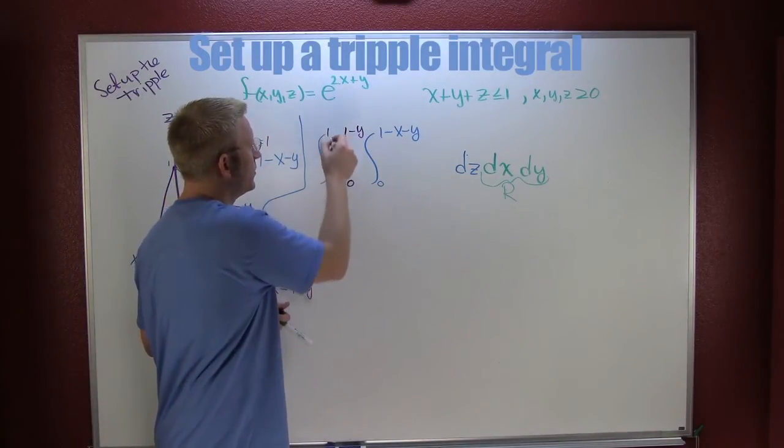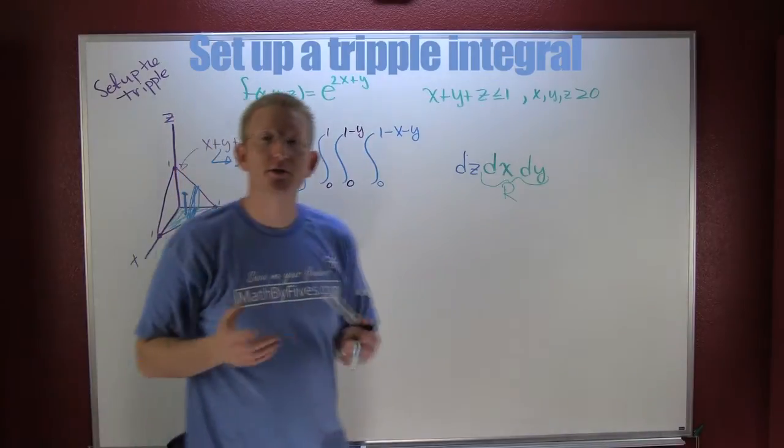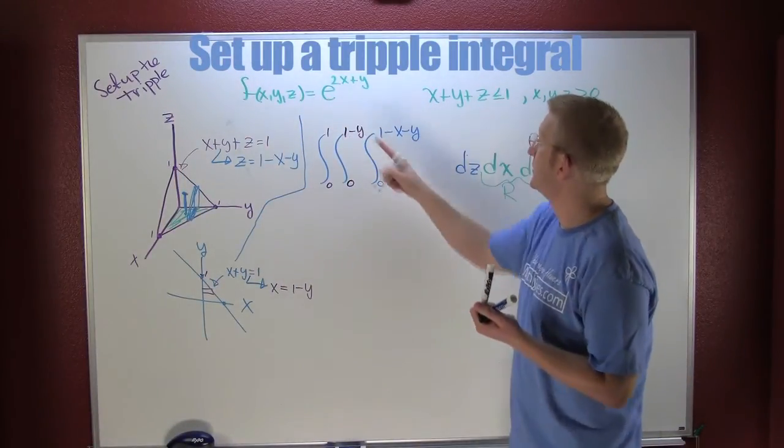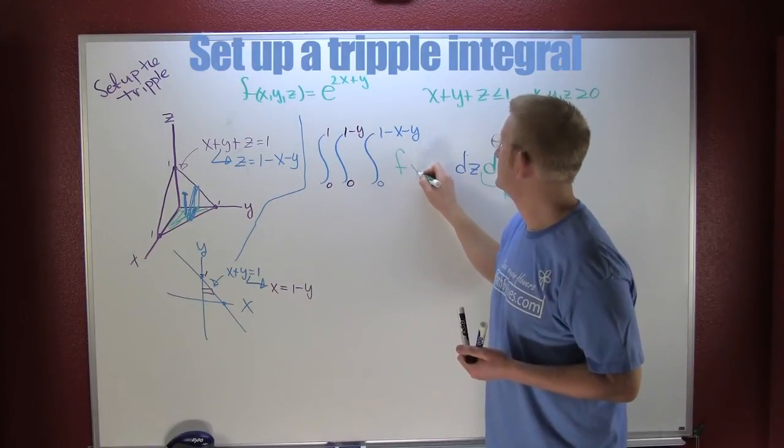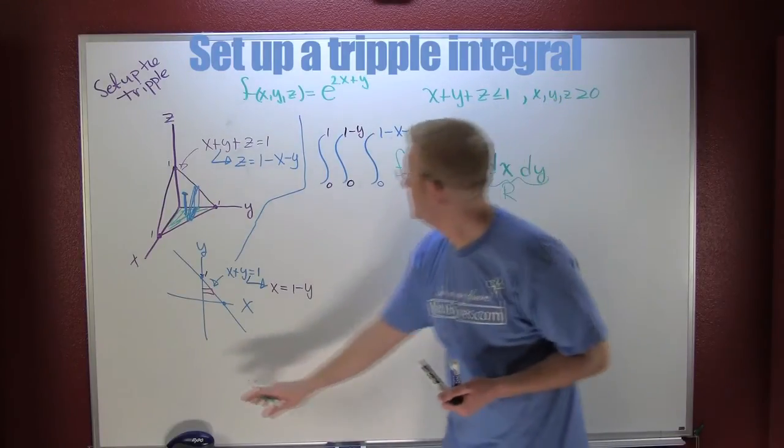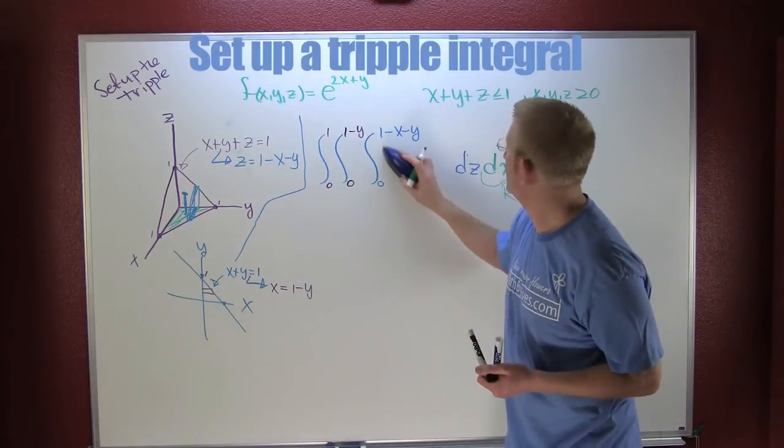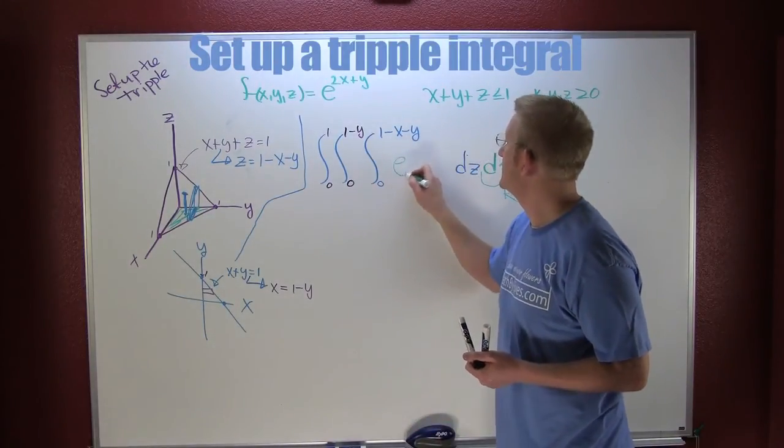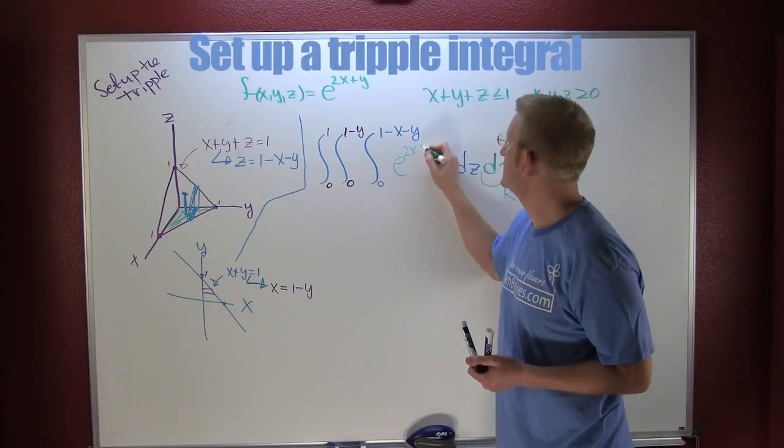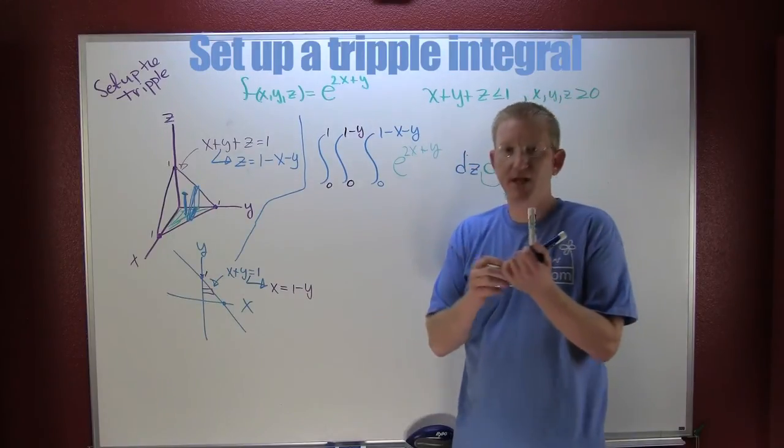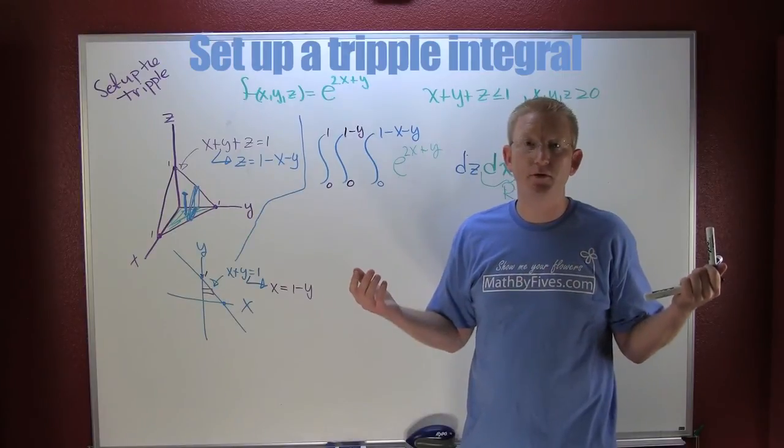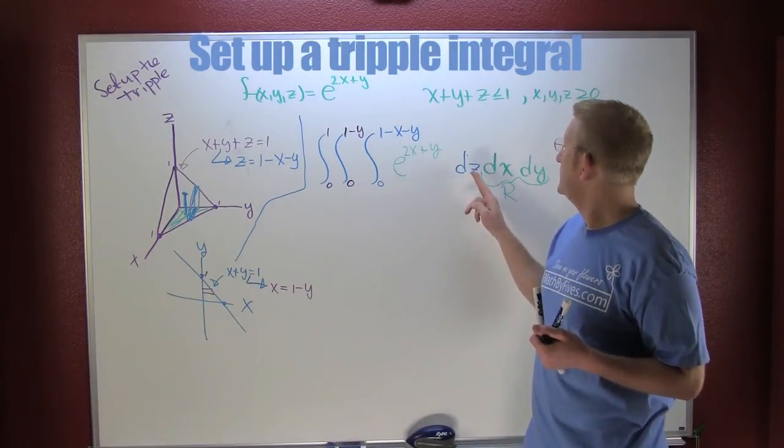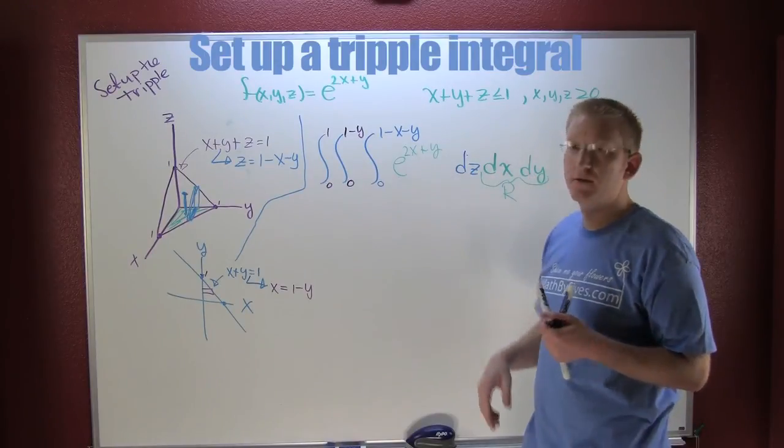Alright, so then finally, Y goes from 0 to 1. That's fun. So let me go and put my function on in there. f of X, Y, Z is e to the 2X plus Y. Fine.